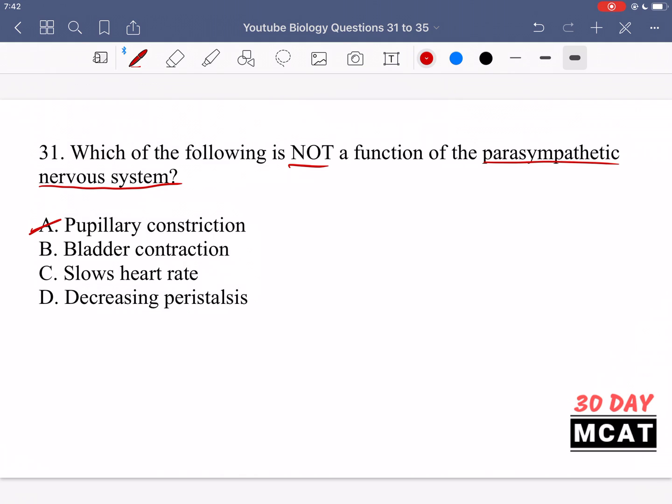B, bladder contraction, yes. The parasympathetic nervous system is responsible for this as well. When you contract your bladder muscles that means you're allowed to urinate and this occurs under rest and digest situations whereas if you're in fight-or-flight situations you do not do this.